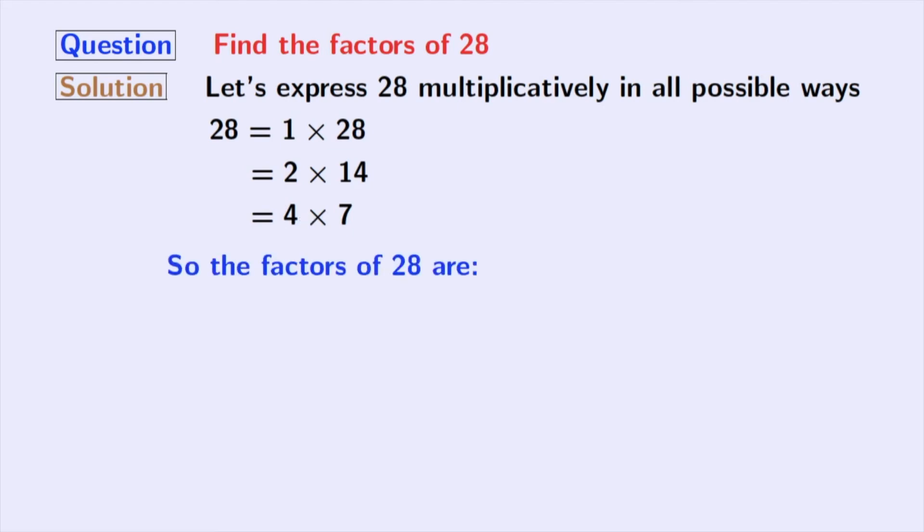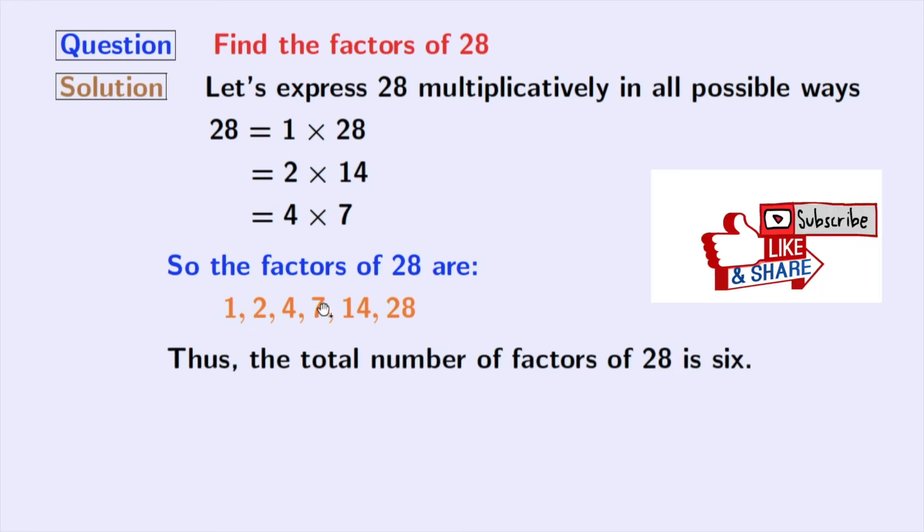Now, we have obtained all the factors of 28 which are 1, 2, 4, 7, 14 and 28. Thus, the total number of factors of 28 is 6.